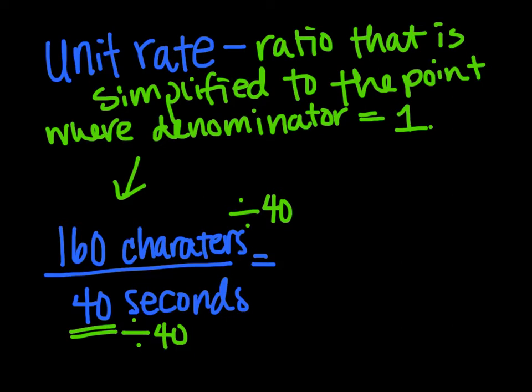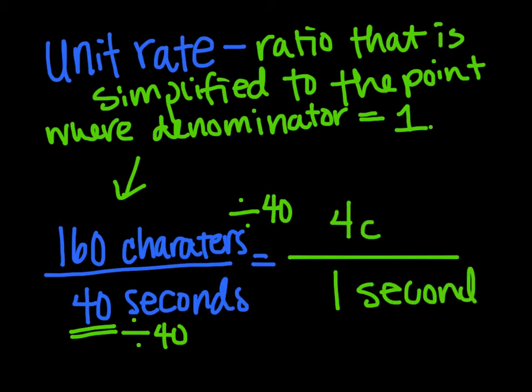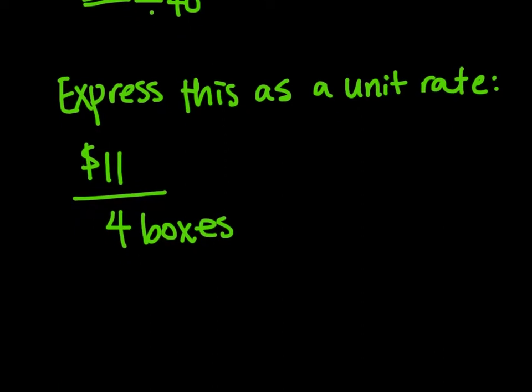And that's very important. So let's do the easy math on the bottom, 40 divided by 40 is 1 second, and 160 divided by 40 is 4 characters. So this person can type 4 characters in 1 second, pretty quick, that's pretty awesome.